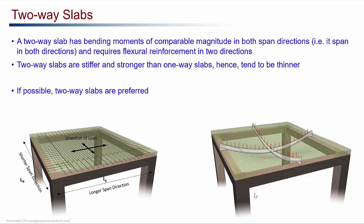Wherever possible, two-way slabs are preferred. As you can see in the figure, the slab is resting on all four sides on beams. There is significant bending moment in both x and y directions, and thus we have to provide flexural reinforcement in both x and y directions.